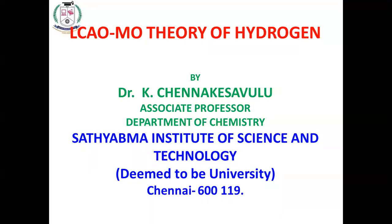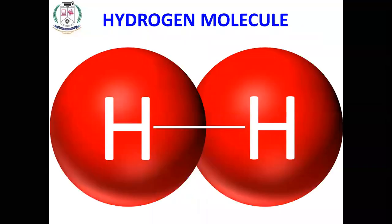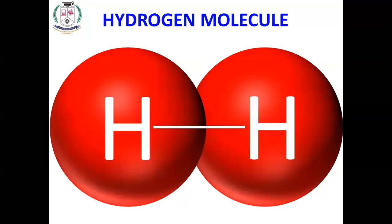Good morning to all. Today we will discuss linear combination of atomic orbitals and molecular orbital theory of hydrogen molecule. Why do hydrogen atoms form a hydrogen molecule? Because of stability — it needs stability or the octet rule. Due to that, two hydrogen atoms combine and form a hydrogen molecule.